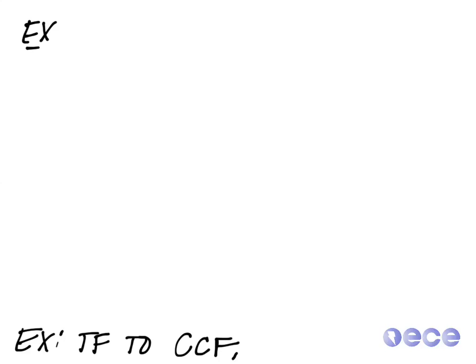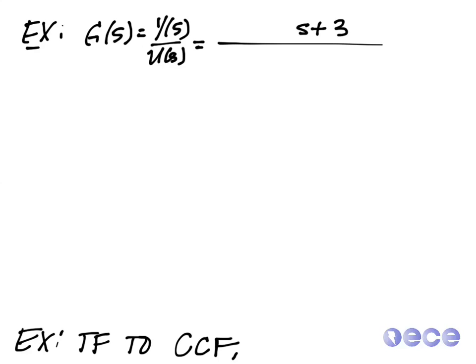So here's our example transfer function. G of s, which is equal to Y of s over U of s, is equal to s plus 3 over s cubed plus 9s squared plus 24s plus 20.